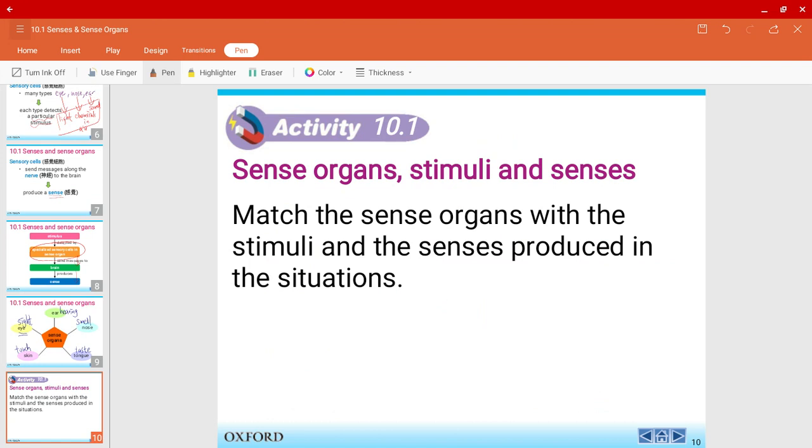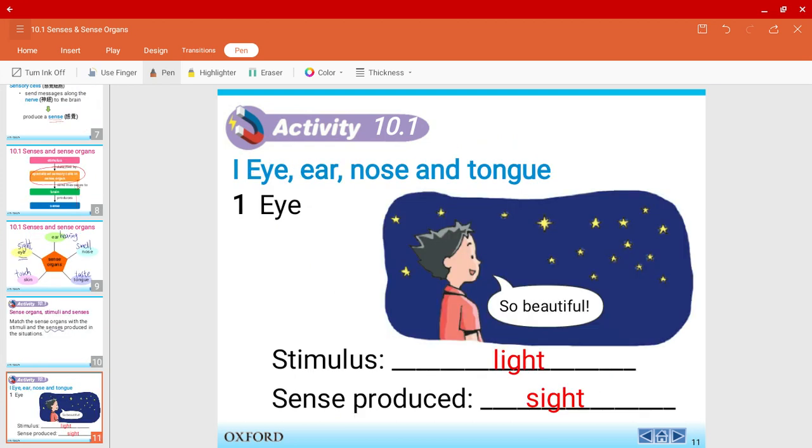So now let's do activity 10.10. Let's match the sense organs with the stimuli and the senses that are produced in these situations. So first off you have the eye. The stimulus is light and the sense produced is the sight, what you see. Please make sure you do not mix up the stimulus and the sense. They are a bit different from one another.